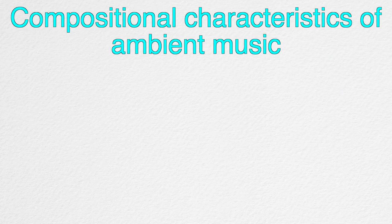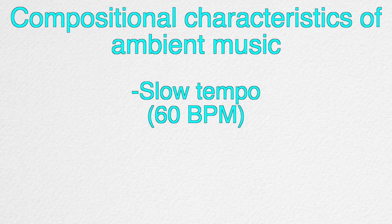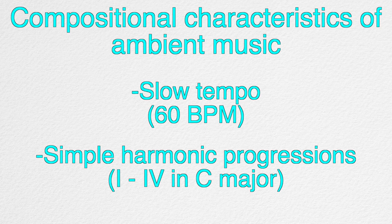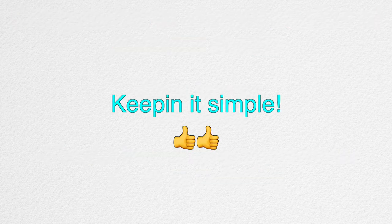In order to get started, we need to first write down some characteristics of Ambient Music. This genre of music is typically very slow, so let's choose 60 as the BPM. In terms of harmonic progressions in Ambient Music, it doesn't need to be anything too complex. We can have the progression be Major 1 and Major 4 harmonies, and we'll choose C Major as the key. As you can tell from my choice of key and harmonic progression, we're dealing only with basic music theory.